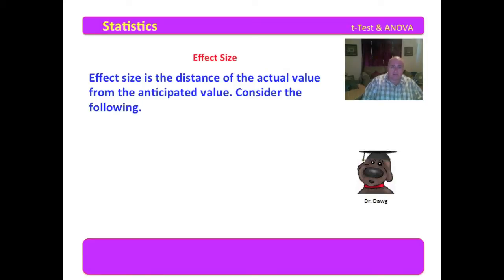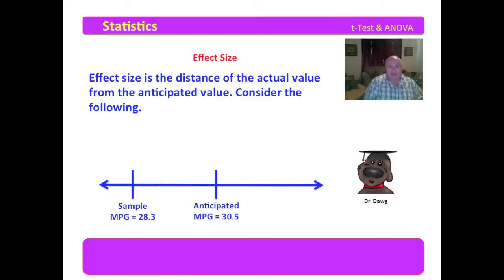Effect size is the distance of the actual value that we gain for the mean from the dataset from the anticipated value for the mean. Consider the following: we might have a group of cars, and we expect that group of cars would have a mean miles per gallon of 30.5. We take a sample and we find that the mean for the sample is 28.3. We have a distance between what was anticipated and what the actual value really is. We call this the effect size, and the effect size in this case would be 2.2 miles per gallon.